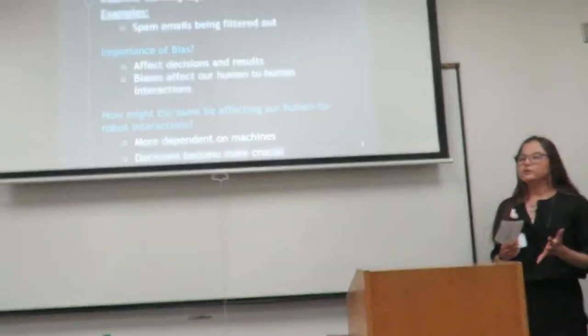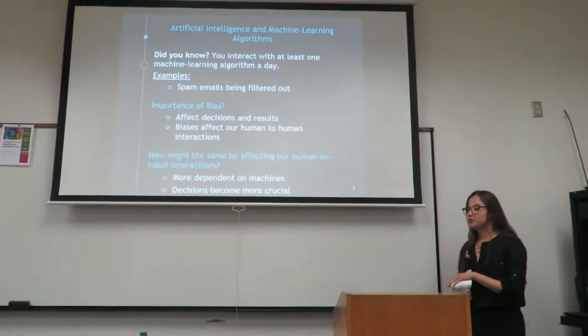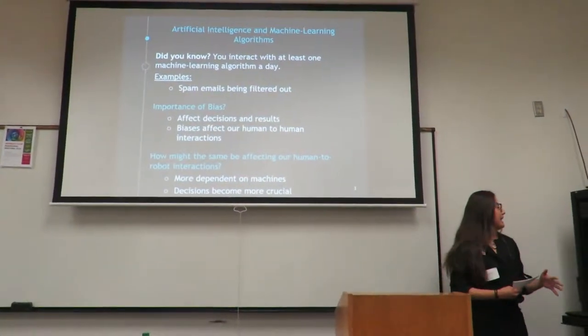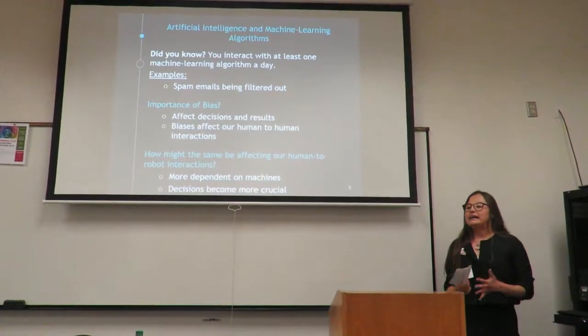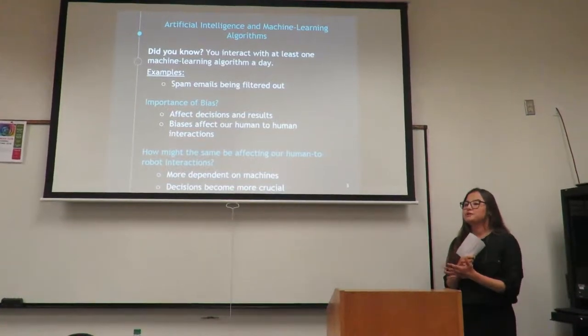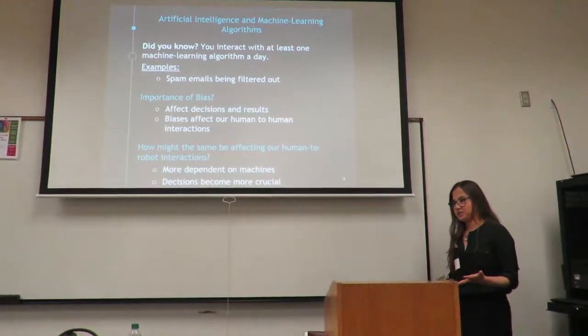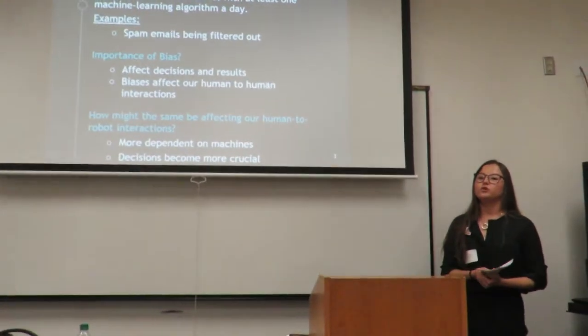Did you know that you interact with at least one machine learning algorithm a day? Examples include your spam emails being filtered out, the optimum price and route of your Uber or Lyft driver, as well as how your search engine results are sorted. Understanding how biases affect our human-to-human interactions — how might the same be affecting our human-to-robot interactions? As we depend more on machines to make our decisions for us, these decisions become more crucial.